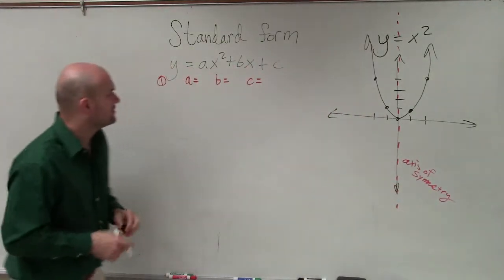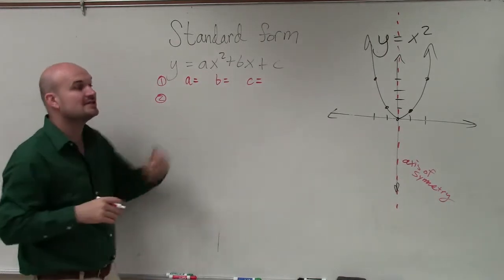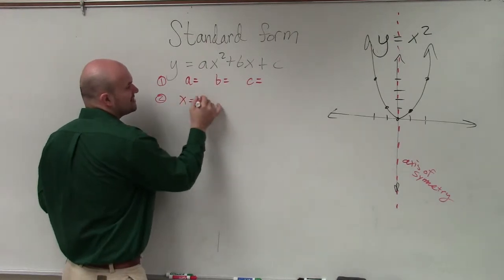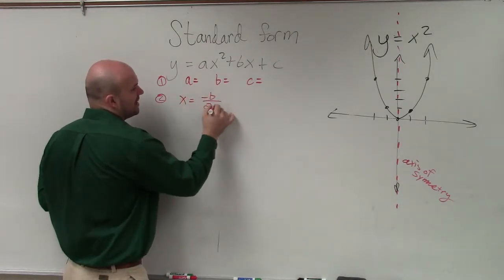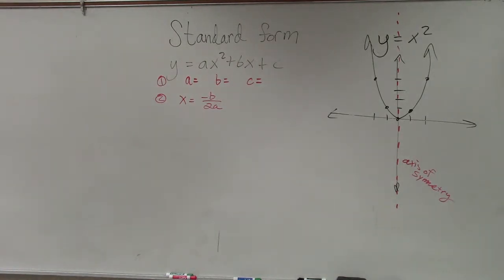And fortunately for you guys, step number two is identifying that line. Now, notice it is a vertical line. So the equation is going to be x equals. So all you're simply going to do is x equals opposite of b divided by 2a. And that's simply how you find the axis of symmetry.